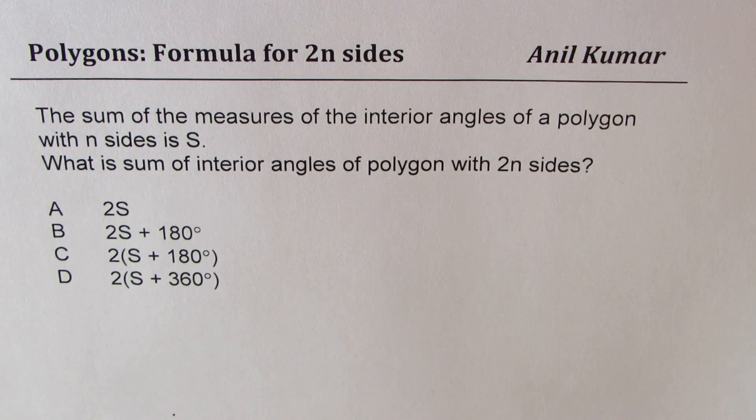The question here is: the sum of measure of interior angles of a polygon with n sides is S. What is the sum of interior angles of polygon with 2n sides? Four choices are given to you.